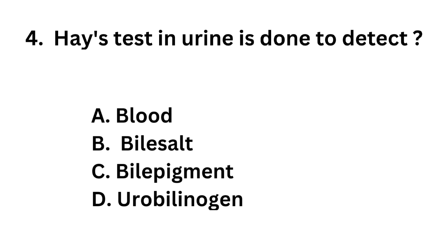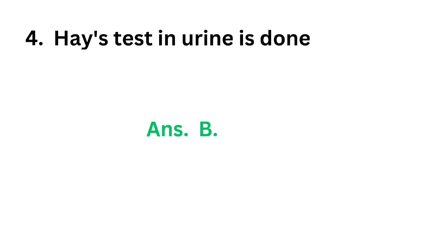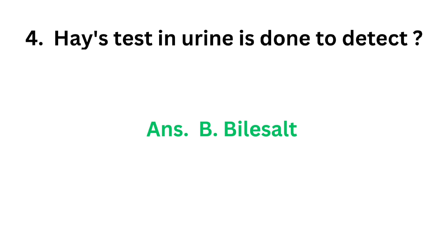Question number 4. Haste test in urine is done to detect? Option A: Blood. Option B: Bile salt. Option C: Bile pigment. Option D: Urobilinogen. The correct answer is option B, Bile salt. Haste test in urine is done to detect bile salt.